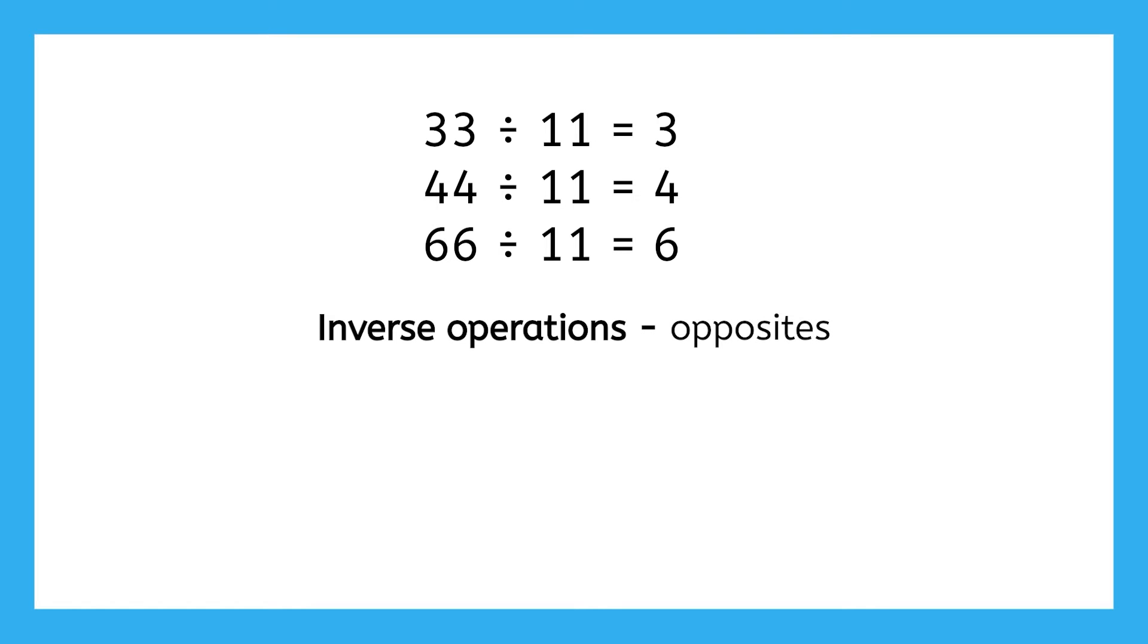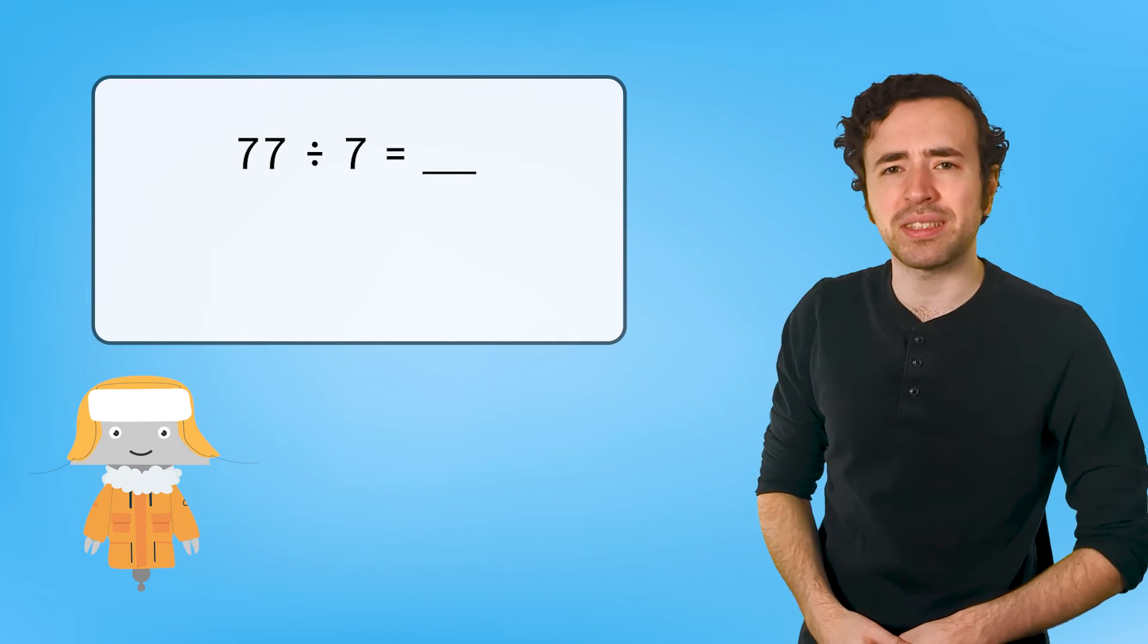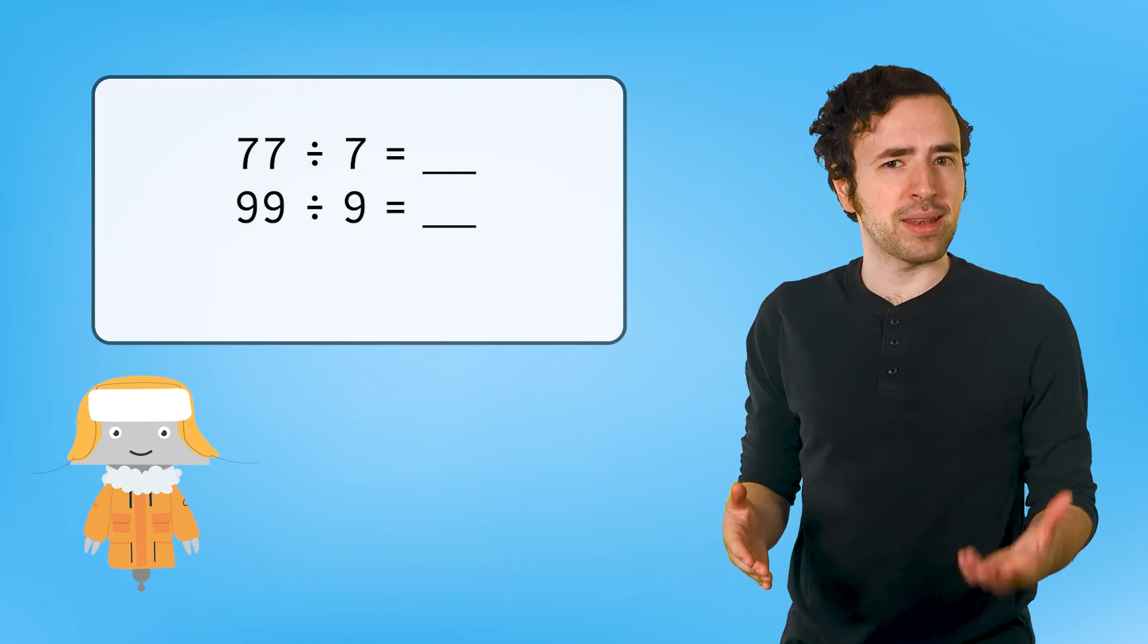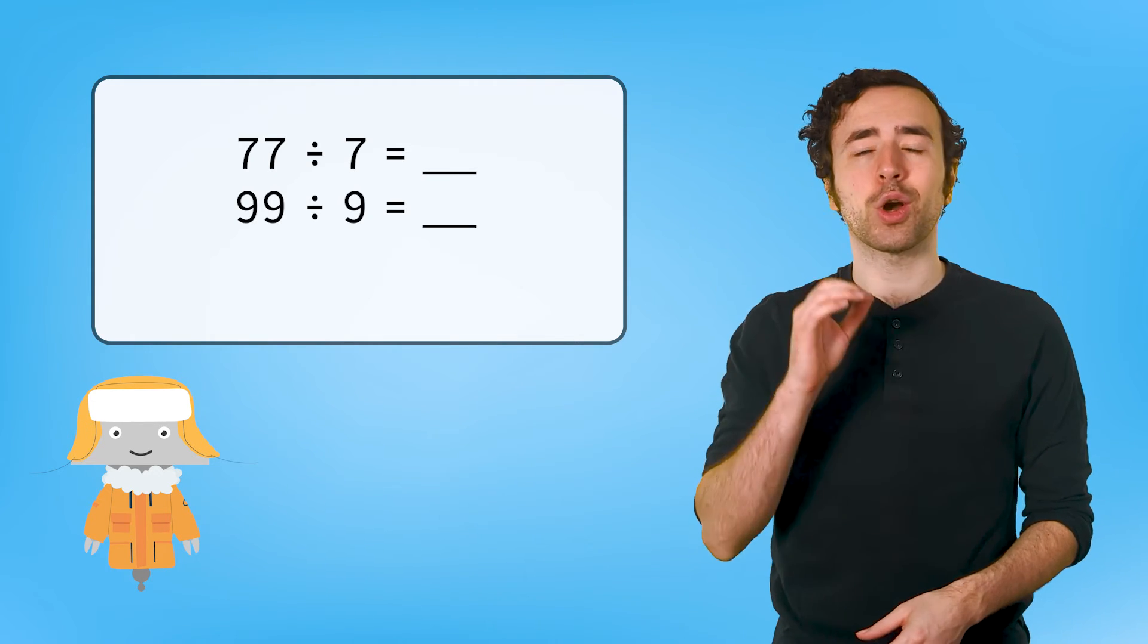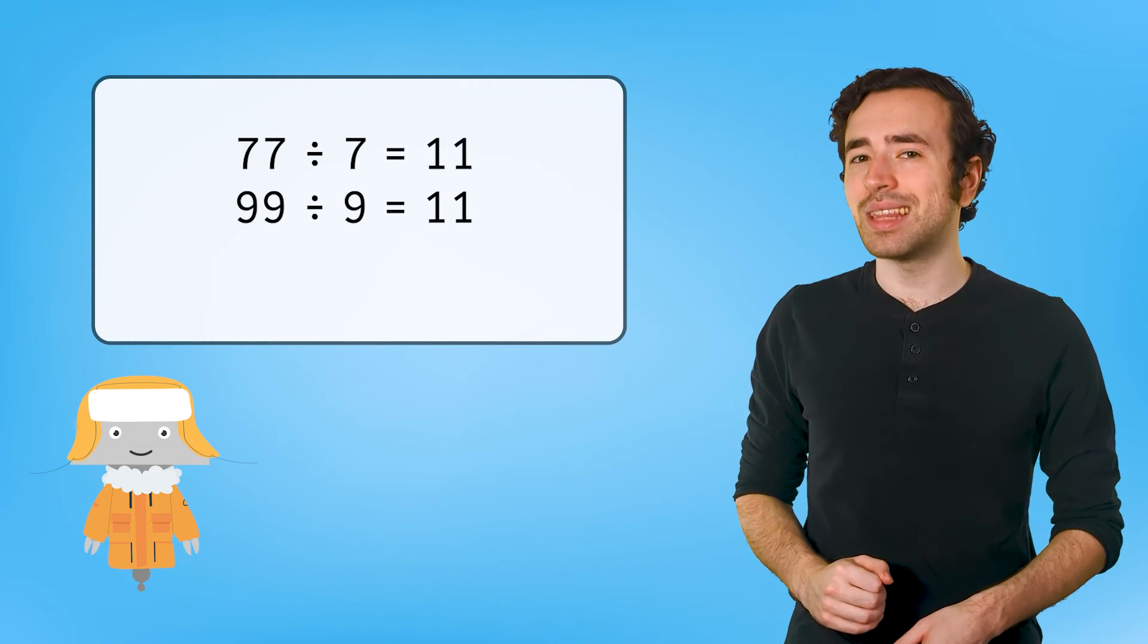When dividing a two-digit number with the same digits, like 33, 44, or 66, by 11, the quotient will be a matching one-digit number. And what about problems like 77 divided by 7 or 99 divided by 9? All those matching digits tell us the quotients must be 11.